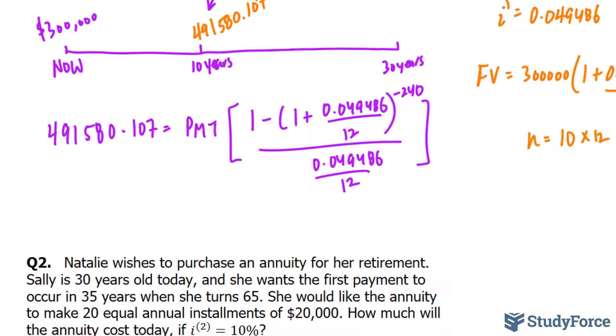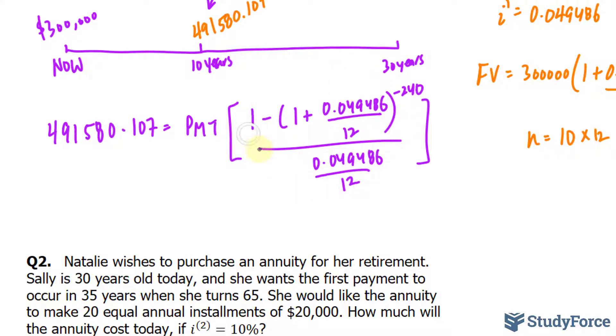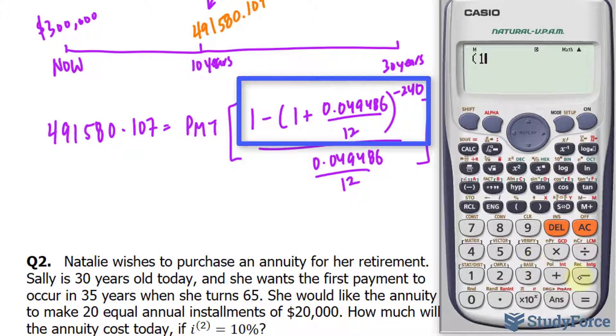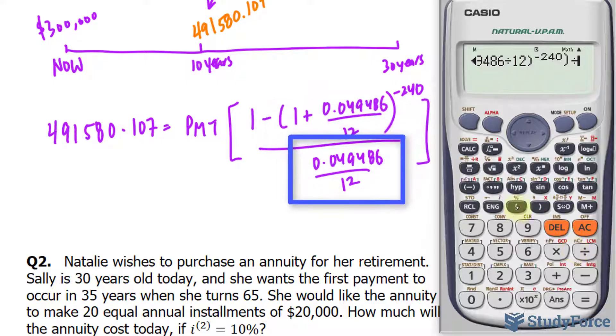Now, using our calculator, I'll find out what that part is, and then divide both sides by what we get. In parentheses, 1 minus, again open, 1 plus 0.049486 divided by 12, close, raise, negative 2, 4, 0, close parentheses, divided by, and at the bottom, 0.049486 divided by 12.